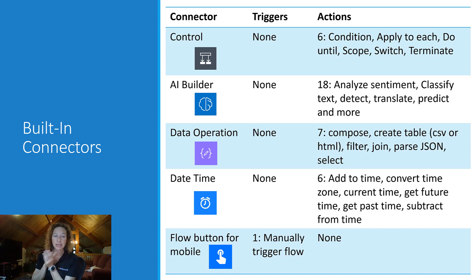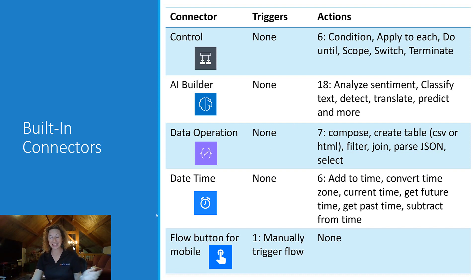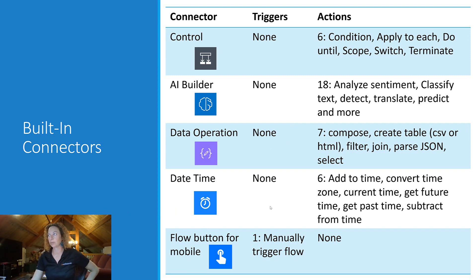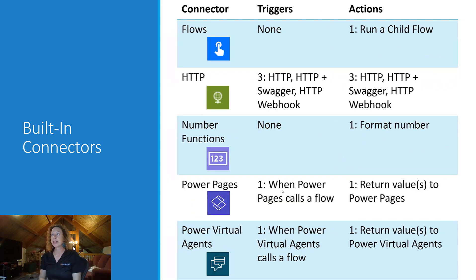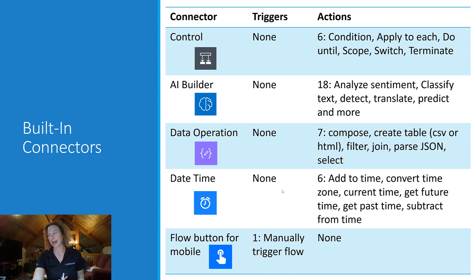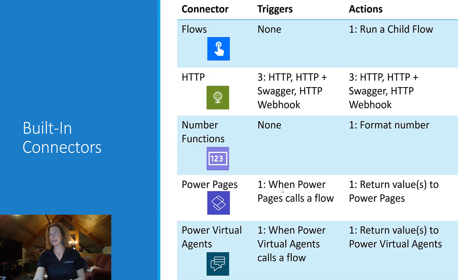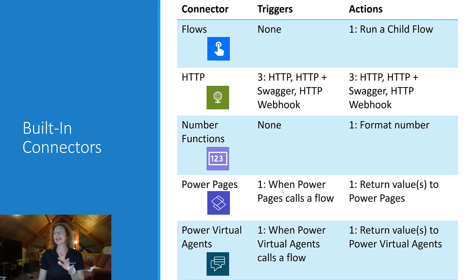Flow Button for Mobile is cool — it's used as a trigger to manually trigger a flow. A user pushes a button and then the flow launches. There are no actions on that one. Alternatively, we have the Flows connector, which — if you check out that icon, it's the same. The Flows connector doesn't have a trigger; it has one action, which is to run a child flow.